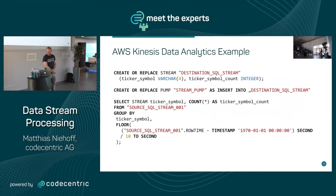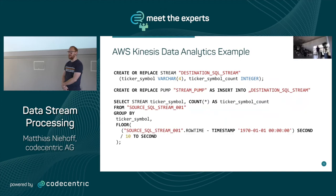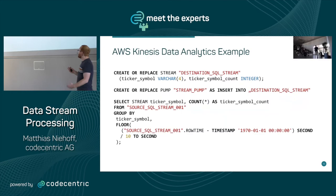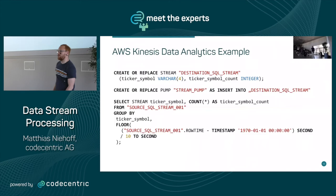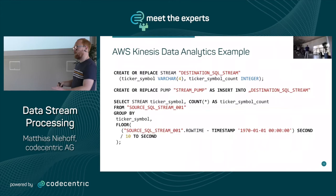The SQL code you write in Kinesis Analytics is SQL-like but has some extensions: you create a stream — which is the destination — with its fields, then create a pump that inserts into that stream, and then select from a source stream to do the analytics. It's all built around these stream and pump concepts in AWS.